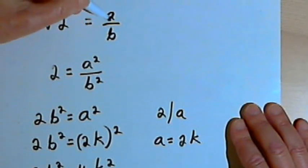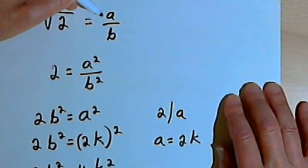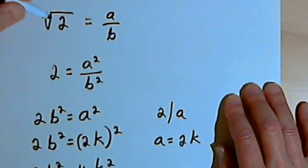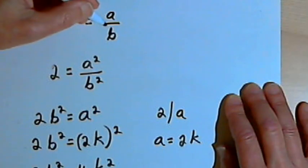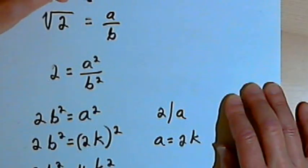Since that assumption was wrong, that means this whole proof falls apart. And I'm not able to prove that the square root of 2 equals a over b. So I'm not able to prove that it's a rational number. So therefore that means the square root of 2 is an irrational number.